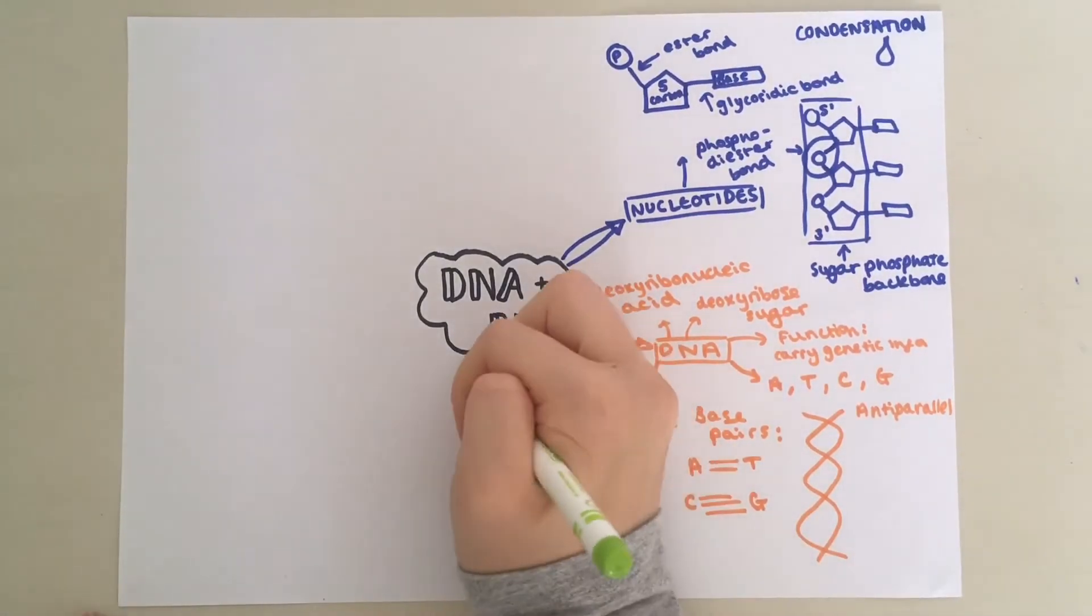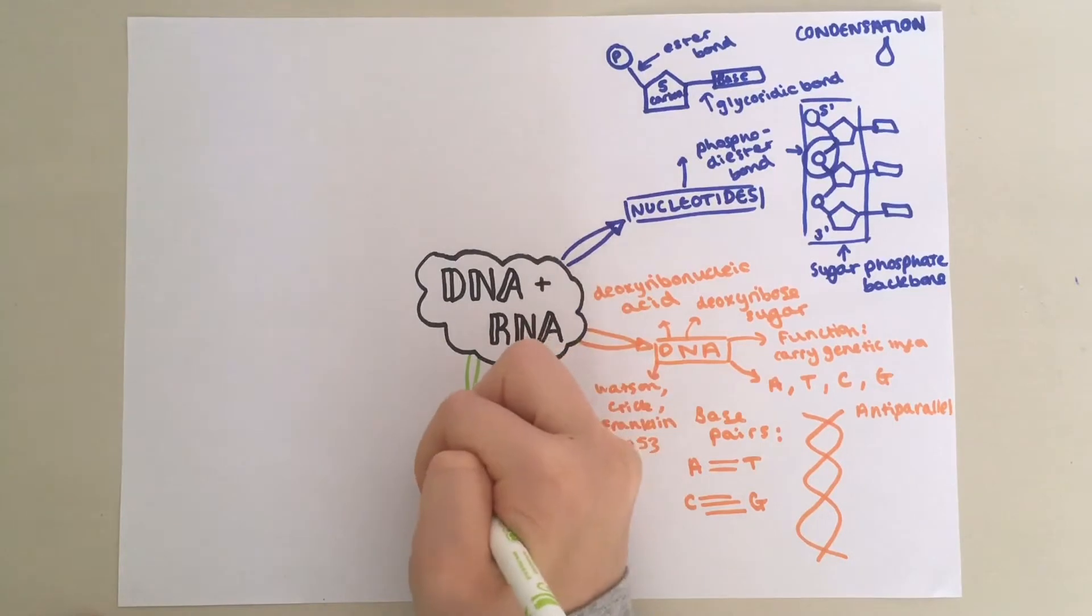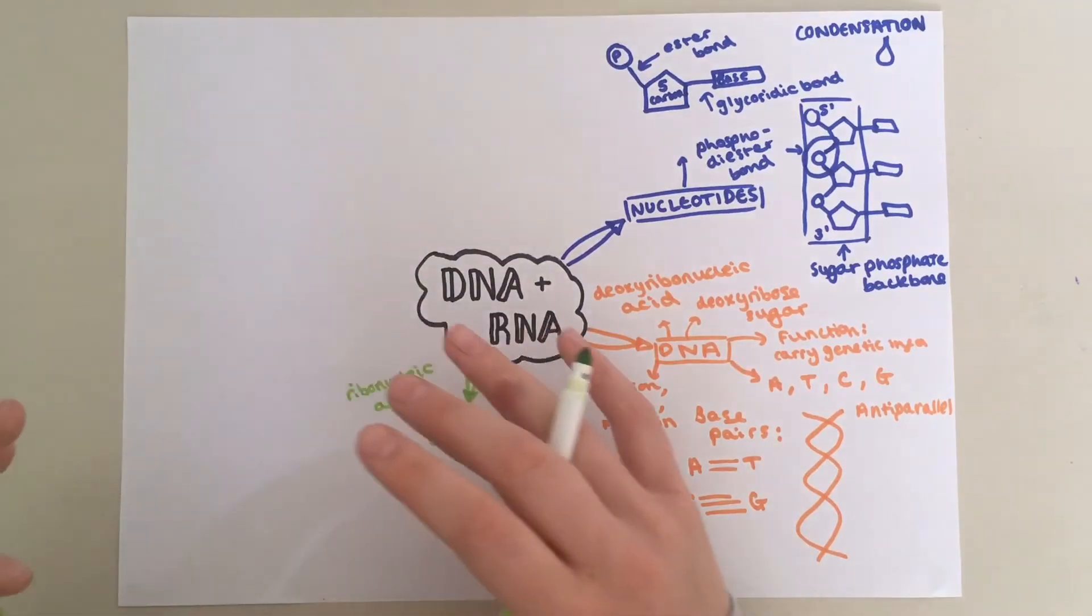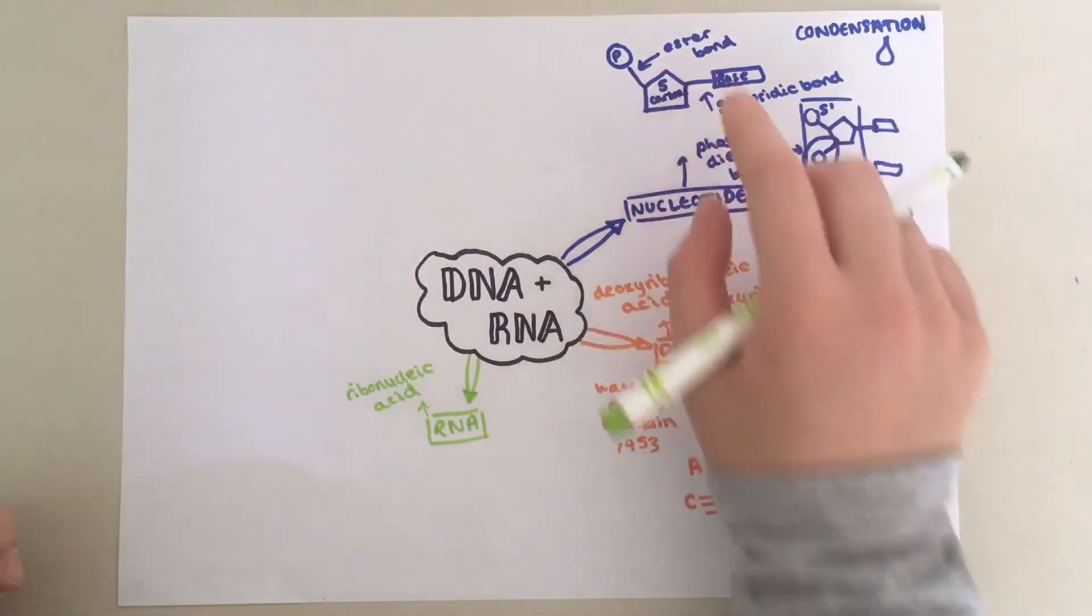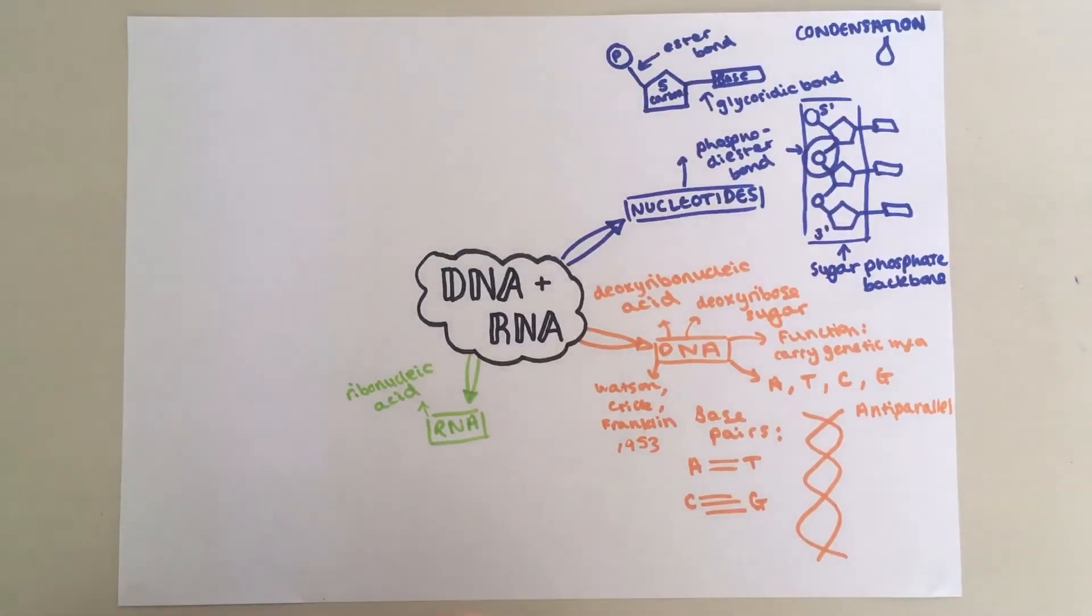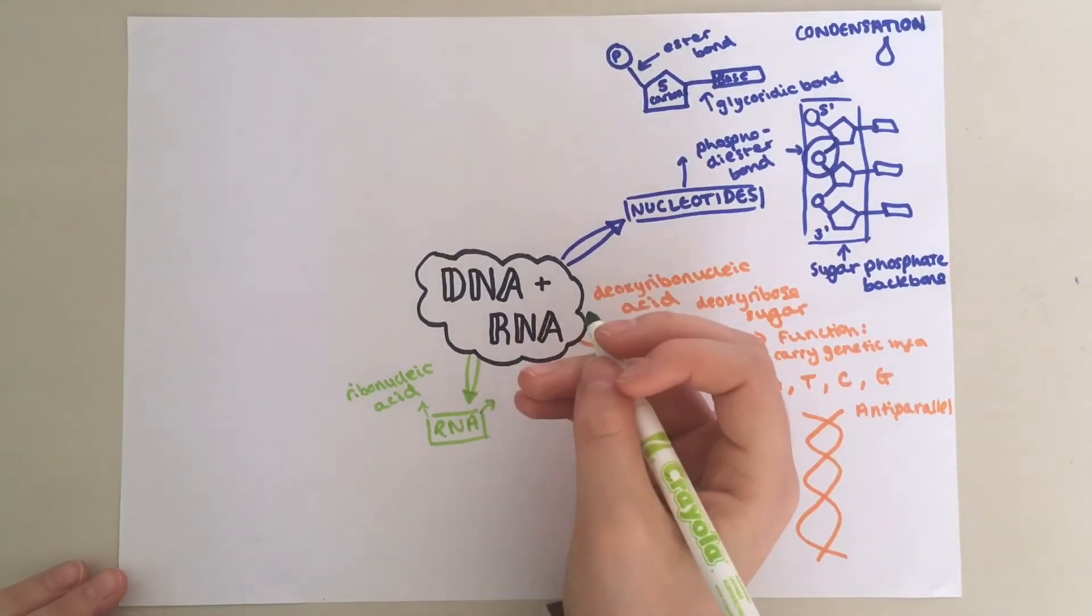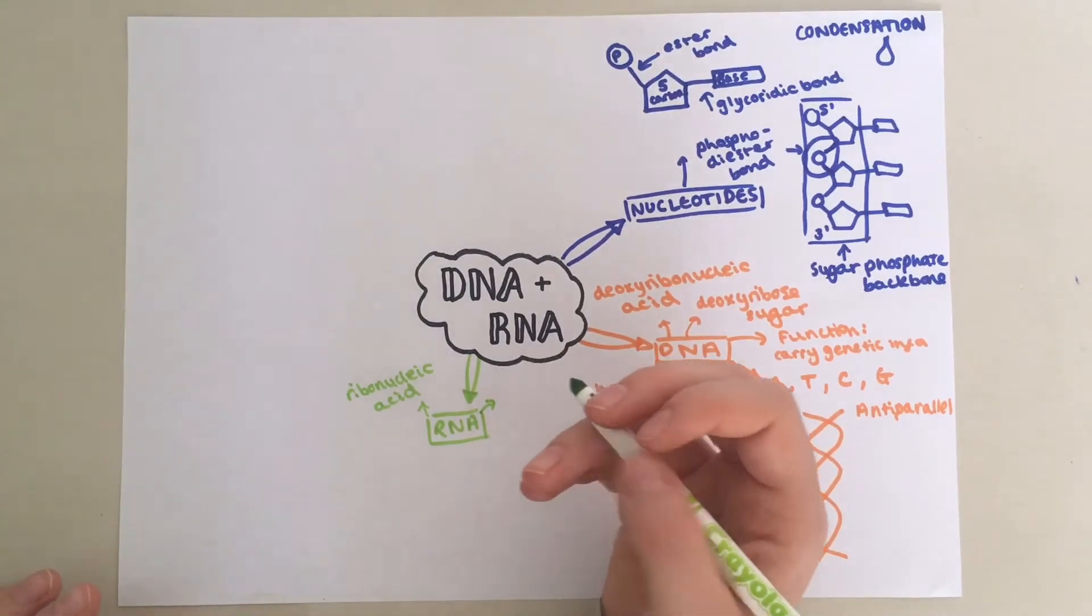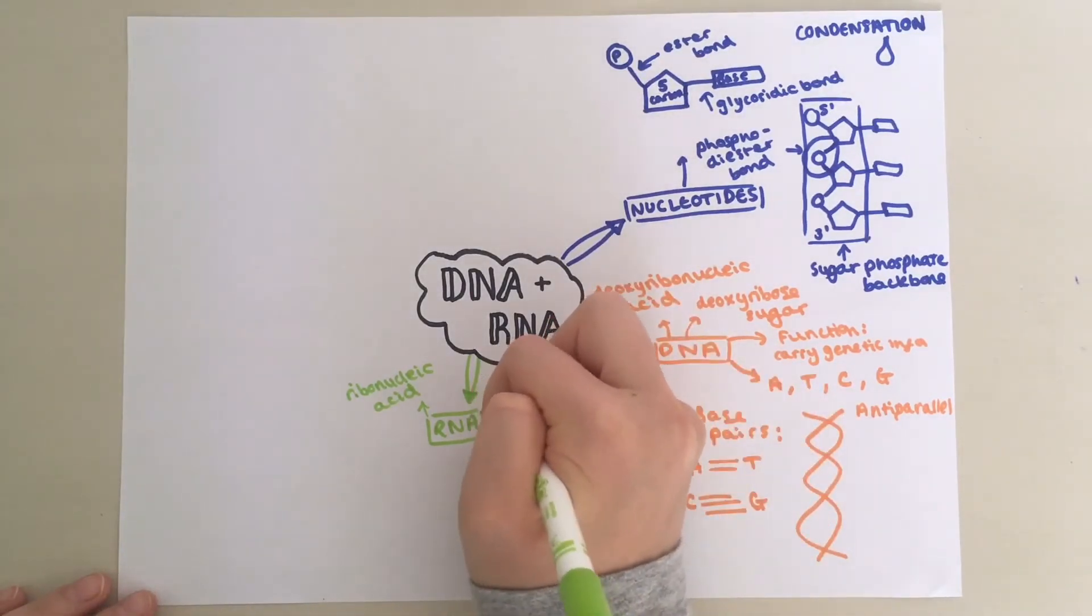Now let's take a look at RNA. RNA stands for ribonucleic acid. This is because the pentose sugar in RNA is ribose sugar. The function of RNA is basically to copy genetic information from DNA and carry it to the ribosomes to synthesize proteins.